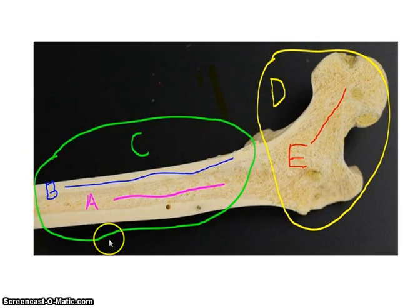The shaft of a long bone is called the diaphysis. And in the center of the diaphysis in a long bone is called the medullary cavity. That's where fatty tissue will be stored.